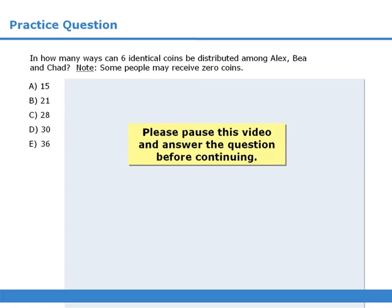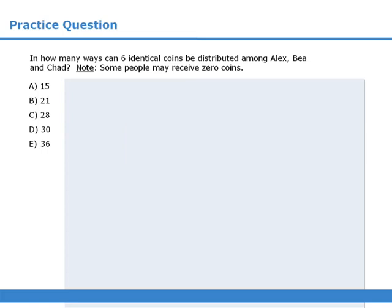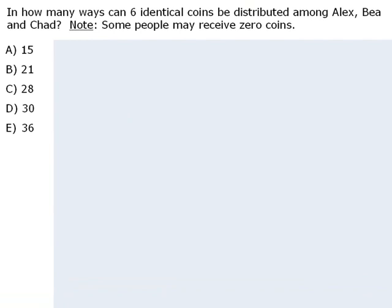Please pause this video and answer the question before continuing. In this question, we must find the total number of ways to distribute 6 coins among 3 people. This is a very difficult counting question — in fact, it's probably too difficult to be a GRE question. However, as you will see, when we begin to list the possible outcomes, we are soon able to identify an easy solution.